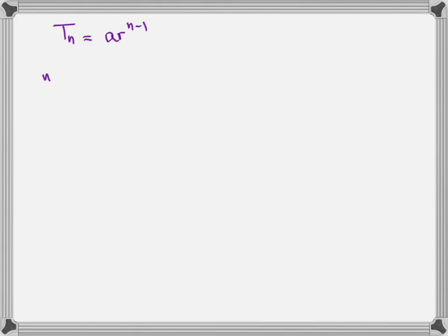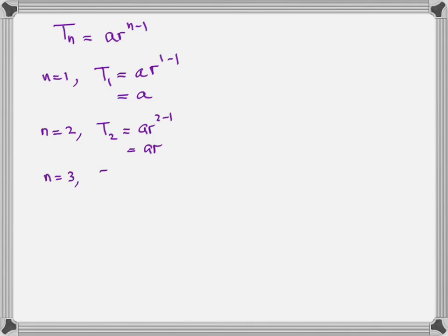For example, if I take the value of n to be 1 and plug it into the equation, the first term simplifies to simply A. Similarly, when I plug in n equals 2, it would simplify to Ar. Similarly, when n equals 3, the third term is Ar squared.